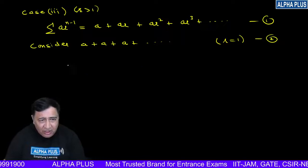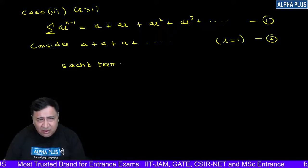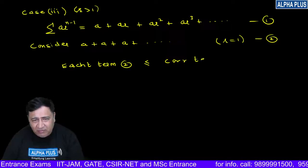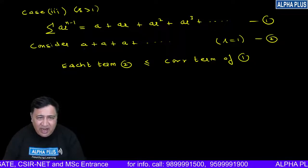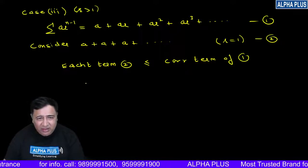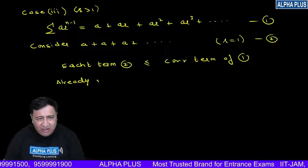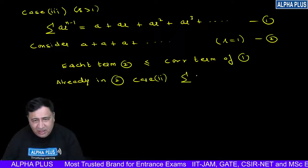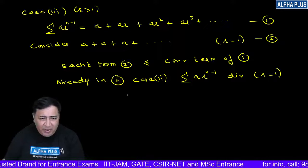If we compare each term of equation 1 with equation 2, it is clearly visible that each term of equation 2 is less than or equal to the corresponding term of equation 1. The reason is: a equals a, and since r is greater than one, a·r is greater than a, and so on. And if the previous series already in case 2 diverged...